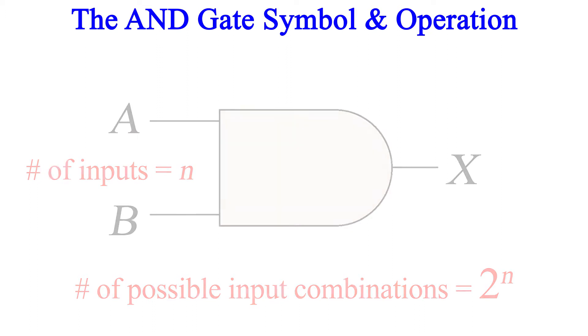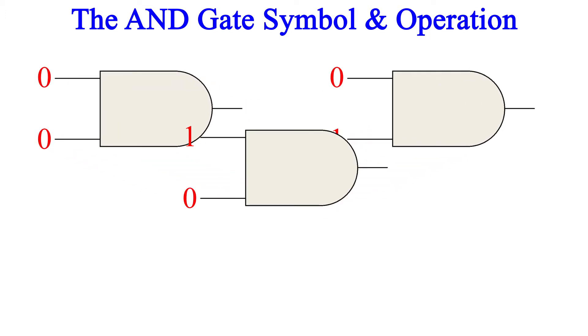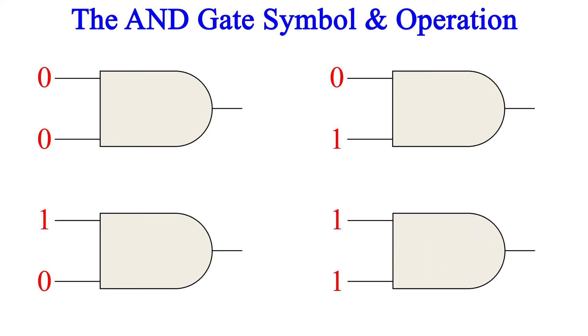We're going to start at zero and count up in binary to get all of the combinations: 0,0 — 0,1 — 1,0 — and 1,1. The AND gate functions by producing an output if, and only if, all of the inputs are high. If any of the inputs is low, there will be no output — that is, the output will be low.